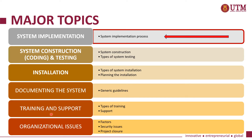The fourth topic is documenting the system — we will go through generic guidelines for documentation and the various kinds of documentation. The fifth topic is training and support, covering various training methods and approaches for supporting users. Finally, in organizational issues, we will cover factors affecting use of the system, security issues, and project closure.